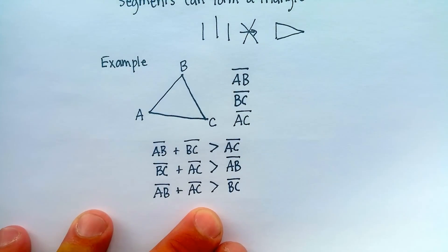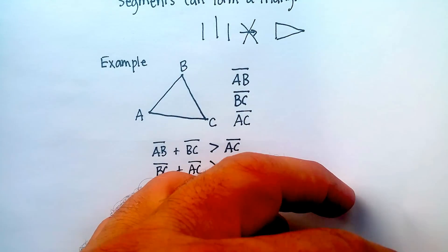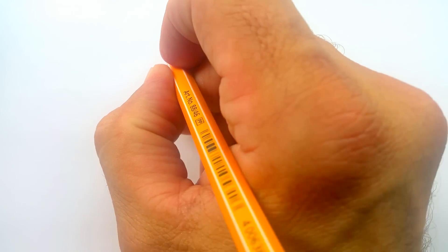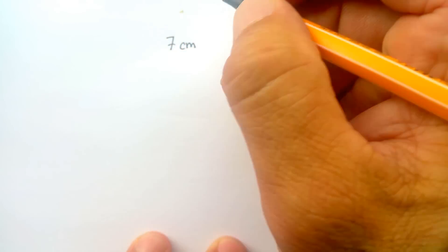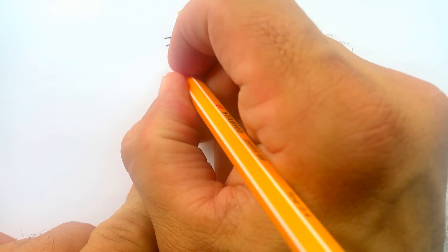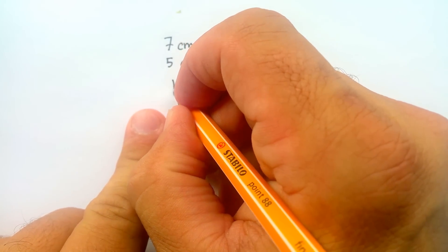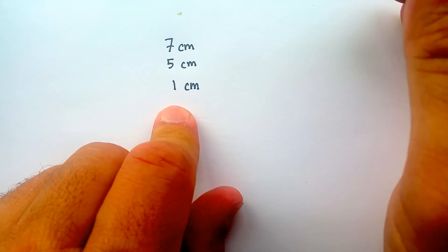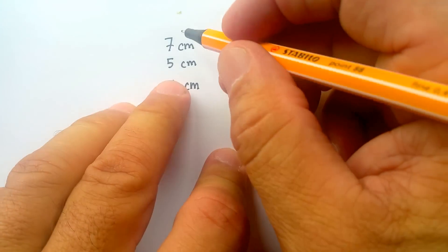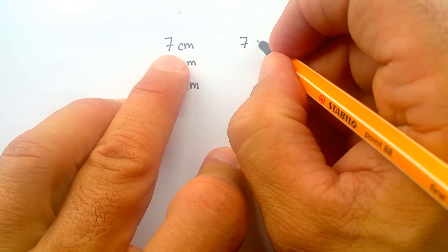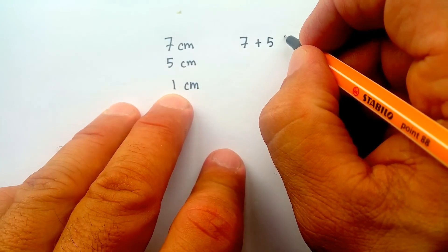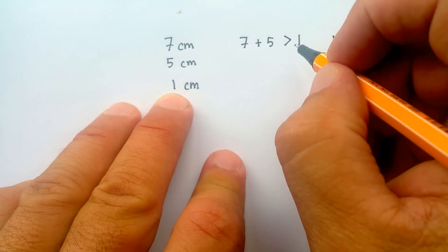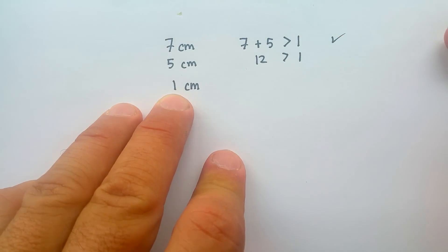So what does this look like in a problem? Let's take three line segments of different lengths. Let's say you have a length of seven centimeters, another one that's five centimeters, and a third one that's only one centimeter long. Can you form a triangle from these three pieces? Let's add seven centimeters plus five centimeters — is that greater than the third side? Yes: 12 is greater than one. So this one works.